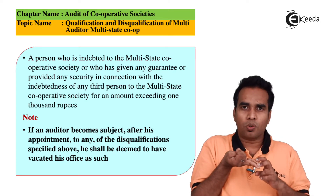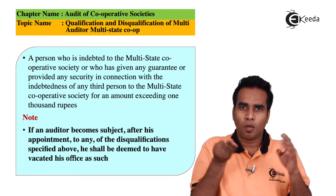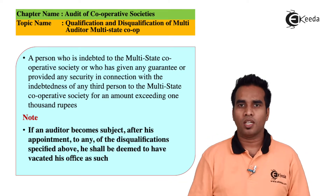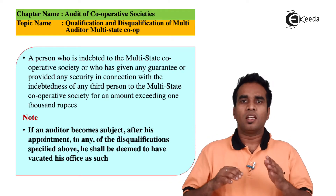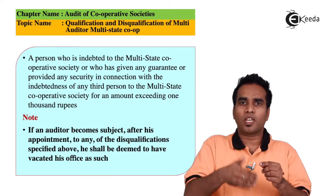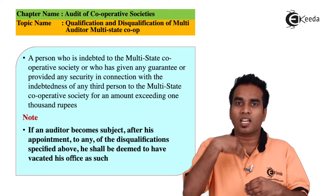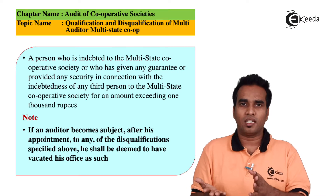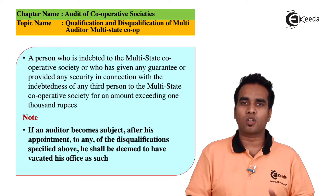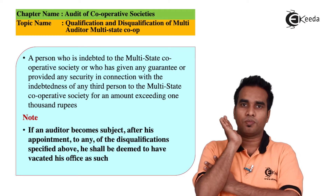To recap: if you are a member, officer, or employee of the society, you cannot be its auditor. Also, if you are a debtor or creditor of that society for more than one thousand rupees, you cannot be appointed as auditor of the Multi-State Cooperative Society.